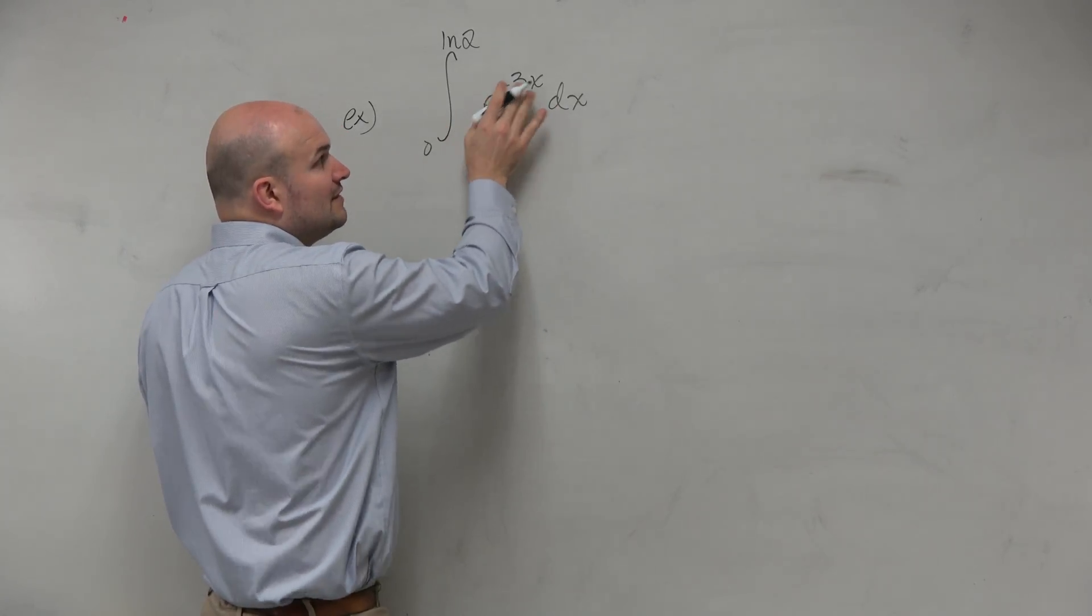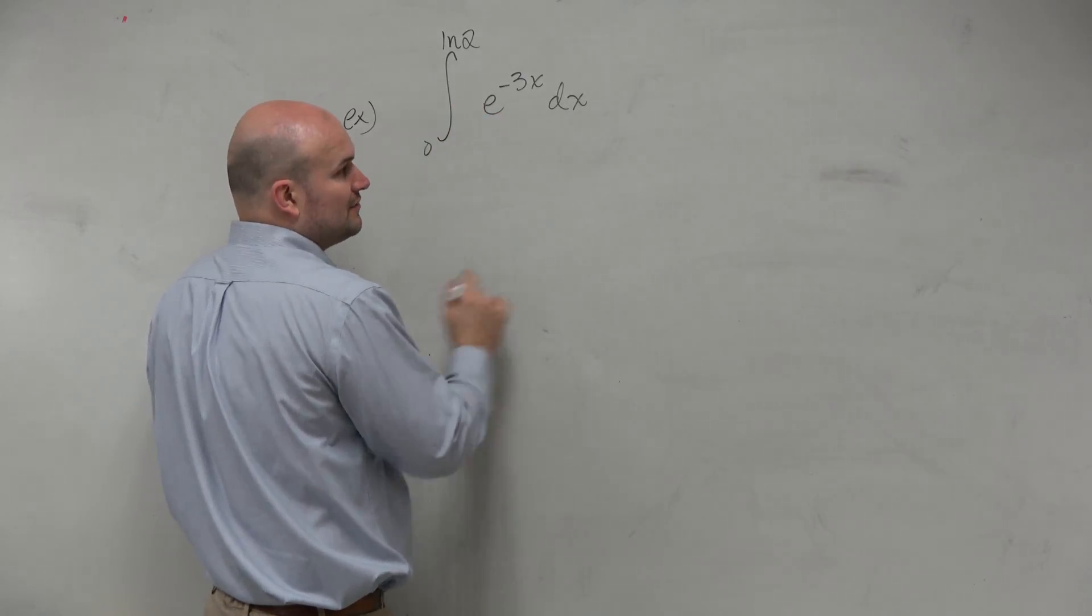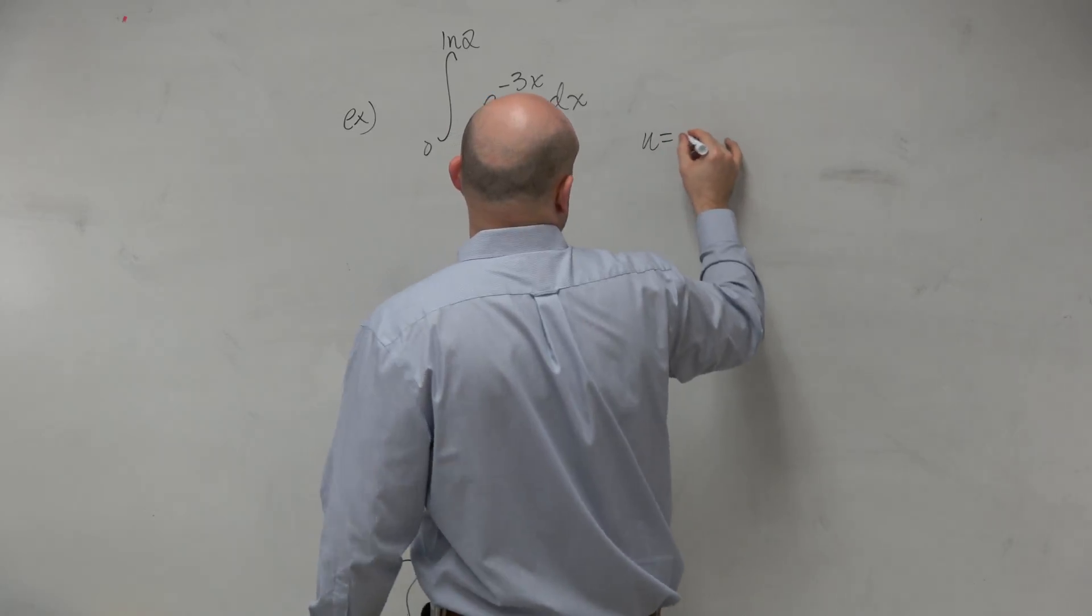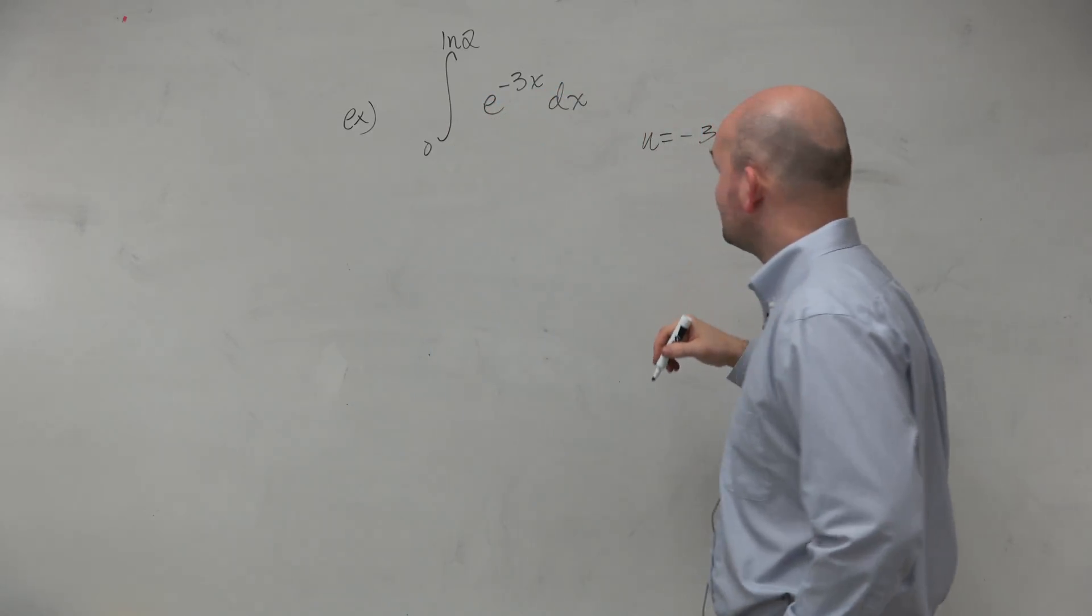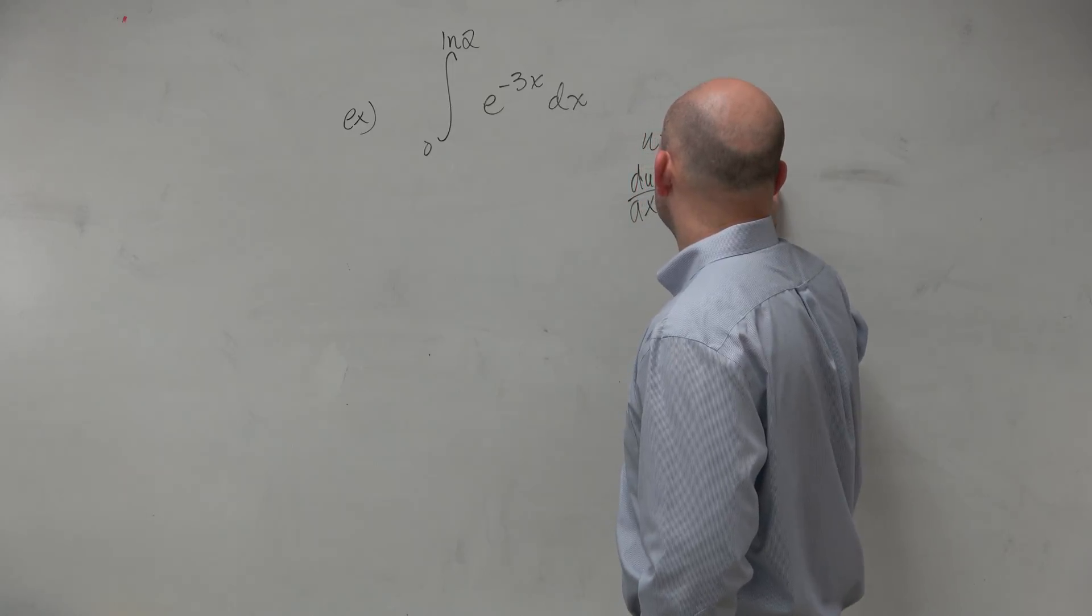We obviously have a composition function. We have the e function, exponential function, and we have negative 3x. So I can say u is going to equal negative 3x. Therefore, du/dx is equal to negative 3.